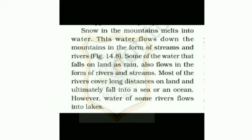Snow in the mountains melts into water. This water flows down the mountains in the form of streams and rivers — you can see figure 14.8. Some of the water that falls on land as rain also flows in the form of rivers and streams. Most of the rivers cover long distances on land and ultimately fall into a sea or an ocean.